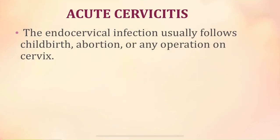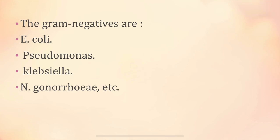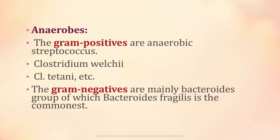In acute cervicitis, the endocervical infection follows an acute cause like childbirth, abortion, or any operation on the cervix. The causative organisms are 50% pyogenic, with aerobes being most common. These include gram-positive organisms like Staphylococcus and gram-negative like E. coli, Pseudomonas, Klebsiella, and Neisseria gonorrhoeae. Anaerobes such as gram-positive anaerobic streptococcus, Clostridium welchii, Clostridium tetani, and gram-negative anaerobes — mainly Bacteroides fragilis — also play a role.